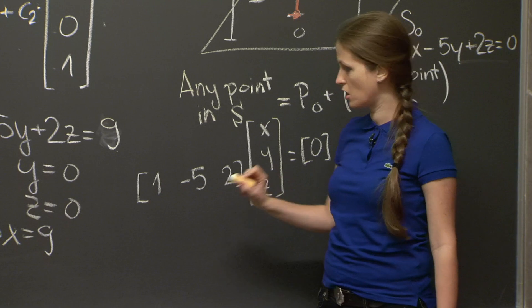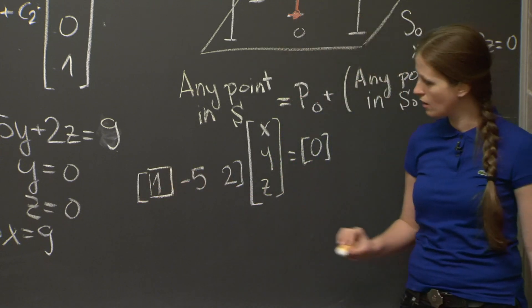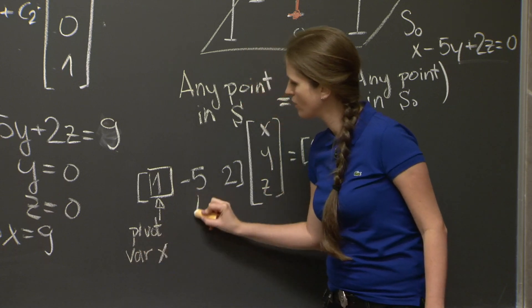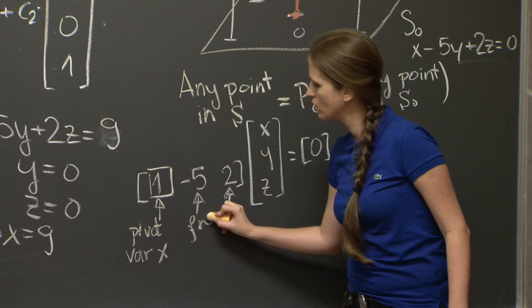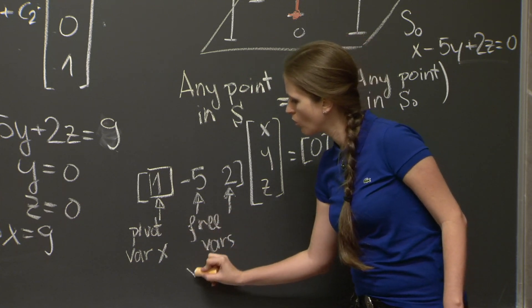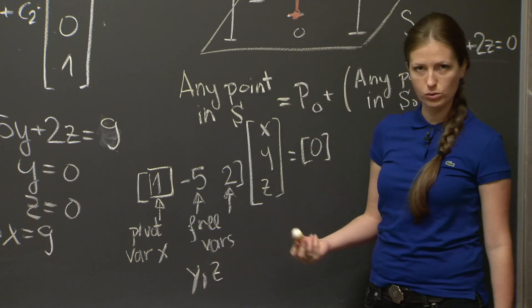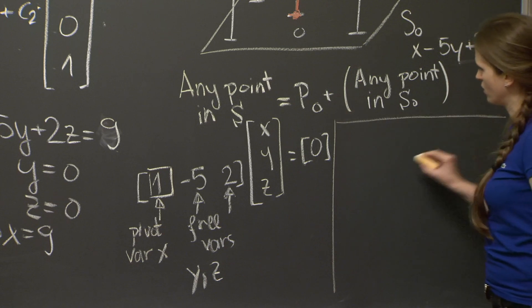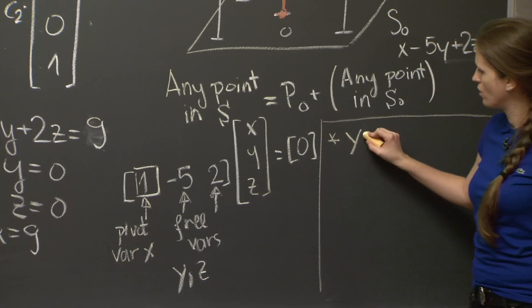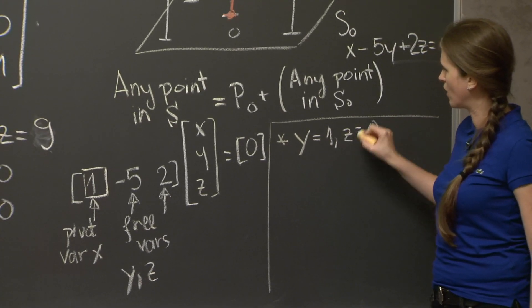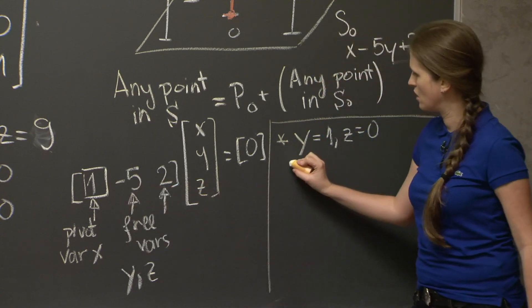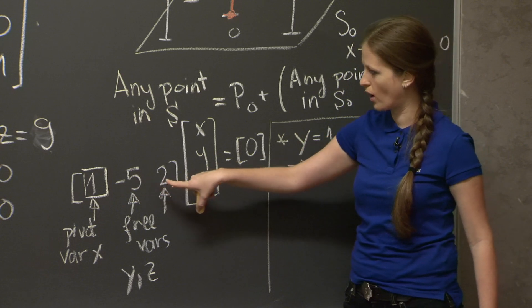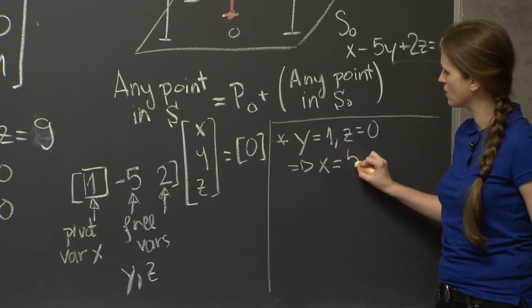Well, let's do row reductions here. It's already as upper triangular as these tiny matrices get. This is a pivot. So we have a pivot variable x. These are free variables, y and z. And if you remember how to solve these systems, for each free variable we get one particular solution. So we get one particular solution when we plug in y = 1, and all the other free variables are 0. Plugging it in here, we just get that in that case x - 5(1) + 2(0) = 0, so x is equal to 5.